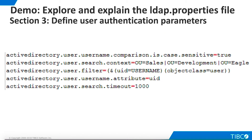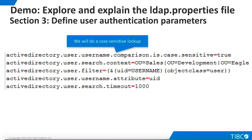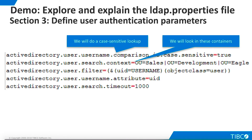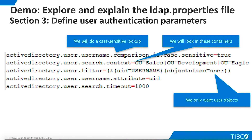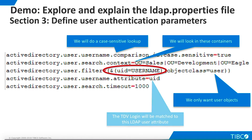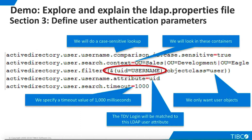Section 3 defines the parameters that TDV will use to authenticate a user at login time. We specify a case-sensitive lookup and that TDV should search three organizational unit containers — Sales, Development, and Eagle. We specify that we are looking for a user object with a UID attribute that matches the TDV login. Once we find a match, we specify that the UID attribute is the data we want returned to TDV. We specify a timeout period of 1,000 milliseconds.